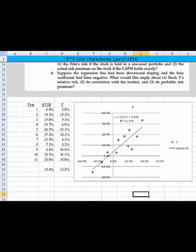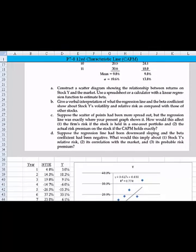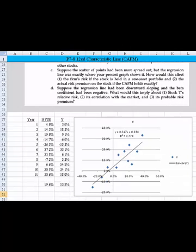Now that we've got that down, let's take a look at part B. Part B says, give a verbal interpretation of what the regression line and the beta coefficient show about stock-wise volatility and relative risk as compared with those of other stocks. Well, what I would say on part B is that because we've got a beta that's at 0.62, which is less than 1, the stock Y is approximately 62% as volatile as the overall market. Therefore, its relative risk is much less than the overall market. Its relative risk, you could say, is about 62% of an average firm in the market.